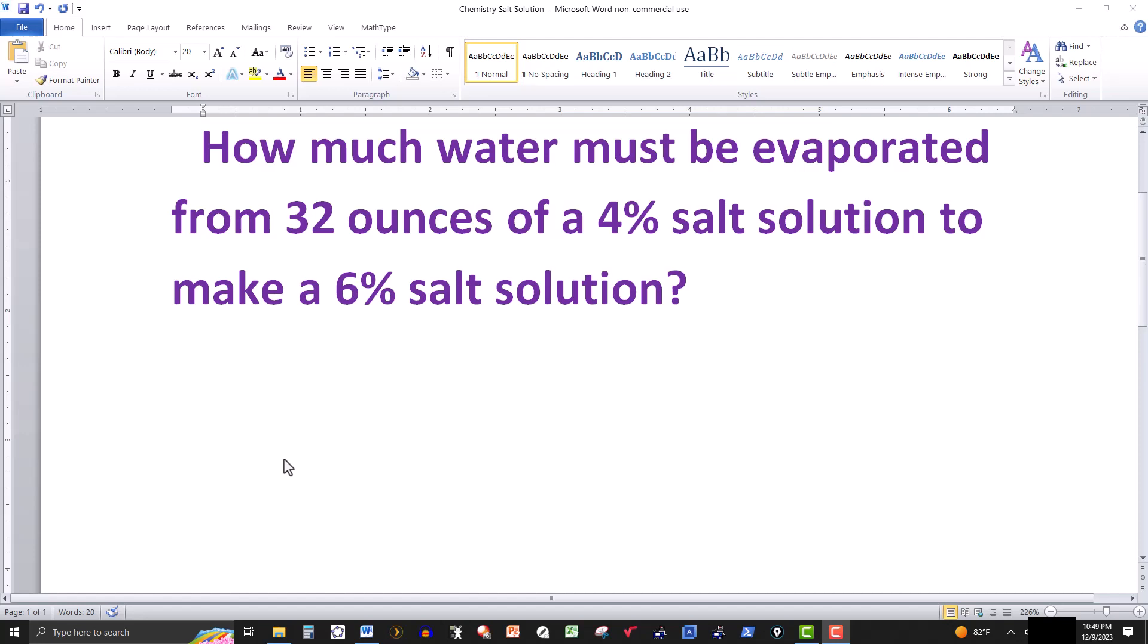In this video we have this particular problem. It says how much water must be evaporated, that is removed, from 32 ounces of a 4% salt solution to make a 6% salt solution. So we have a container with 32 ounces of solution or mixture and it's 4% salt.